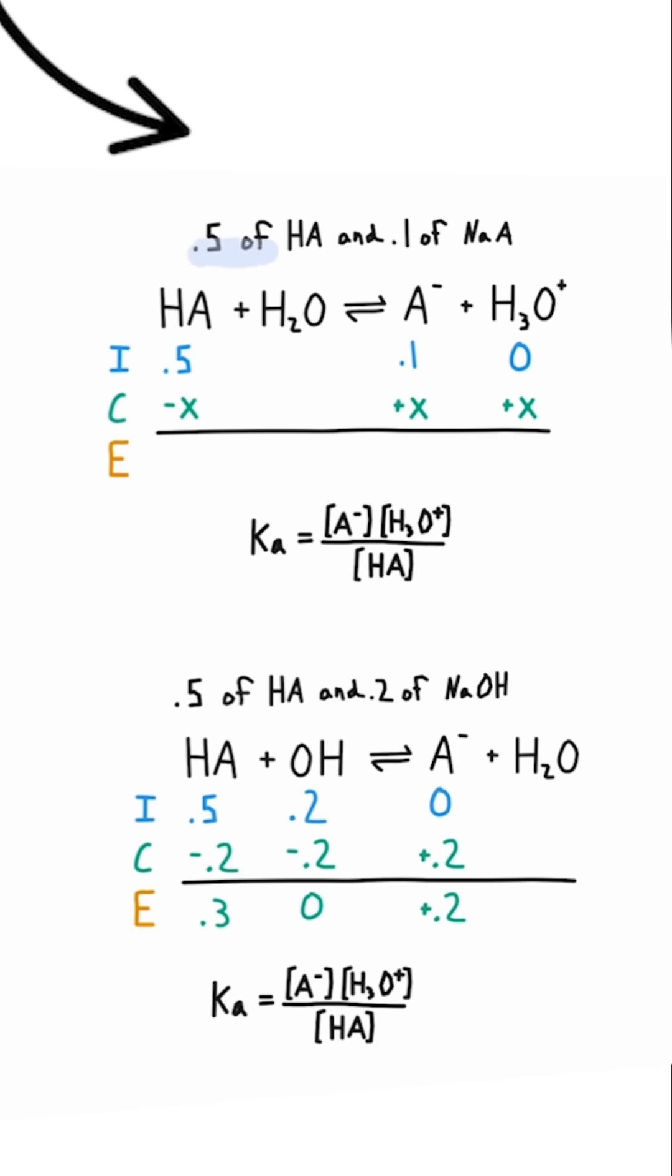The first one is when you're starting off with a weak acid and that solution has some of its conjugate base added. The conjugate base is added by being attached to a positive ion like sodium that will totally dissociate once it's in solution.